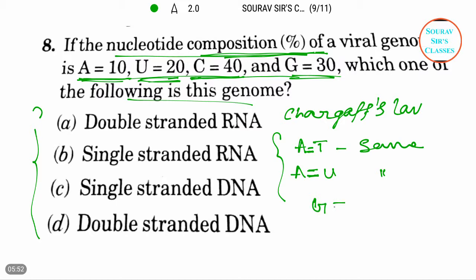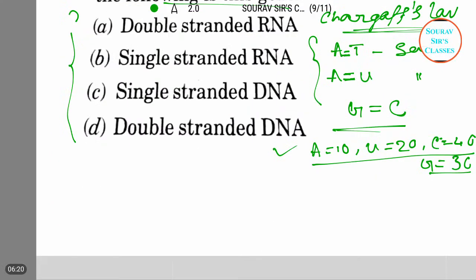So there is a different amount: A is 10, uracil is 20, cytosine is 40, and guanine is 30. So that doesn't obey Chargaff's law.